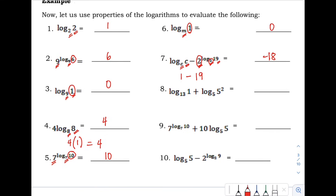Number 8: we have the logarithm of 1 with base 13 — the number is 1, so that equals 0. Plus the logarithm of 5 raised to 2 with base 5 — the bases match, so that equals 2. Then 0 plus 2 equals positive 2.